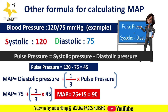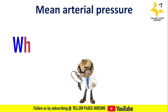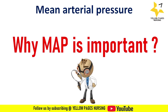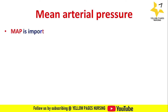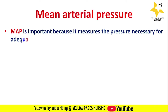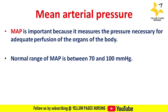Why is mean arterial pressure important? MAP is important because it measures the pressure necessary for adequate perfusion of the organs of the body. The normal range of mean arterial pressure is between 70 and 100 mmHg.